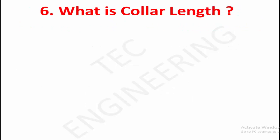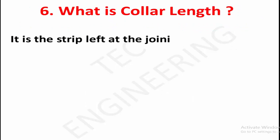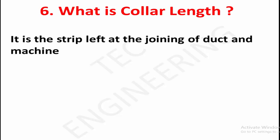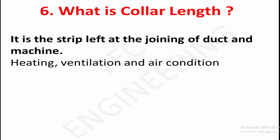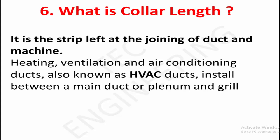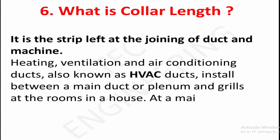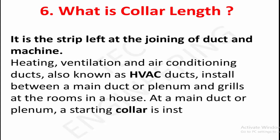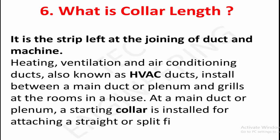What is a collar? A collar is the strip left at the joining of a duct and machine. HVAC ducts are installed between a main duct or plenum and grills at the room. At a main duct or plenum, a starting collar is installed for attaching a straight or split fitting for the ducts.